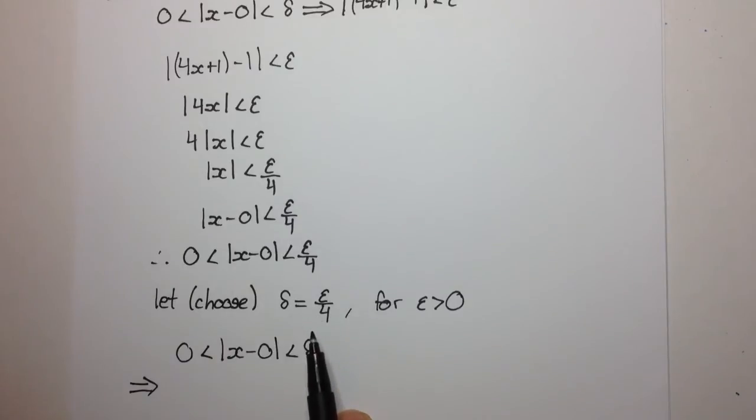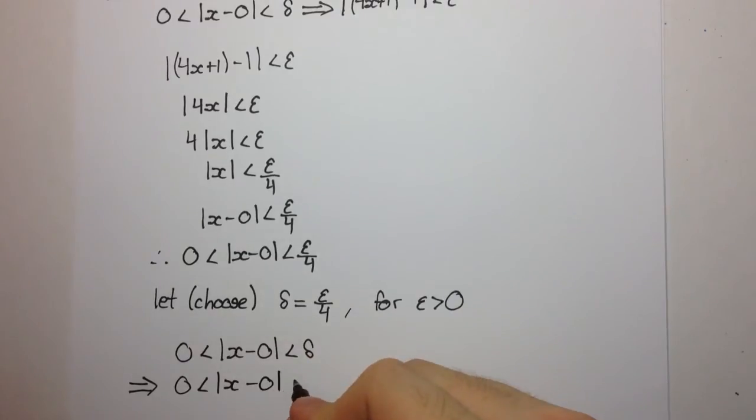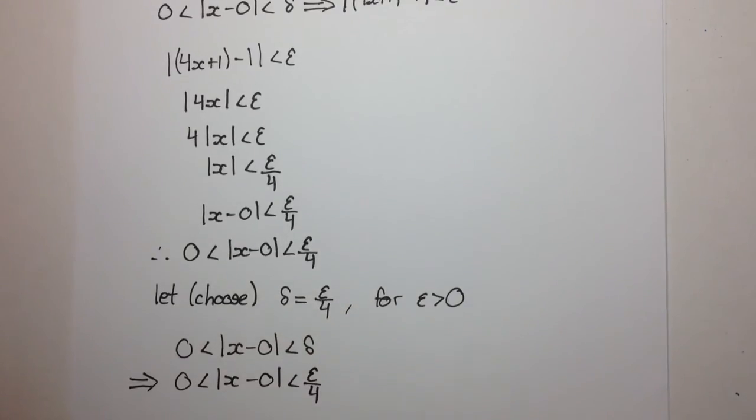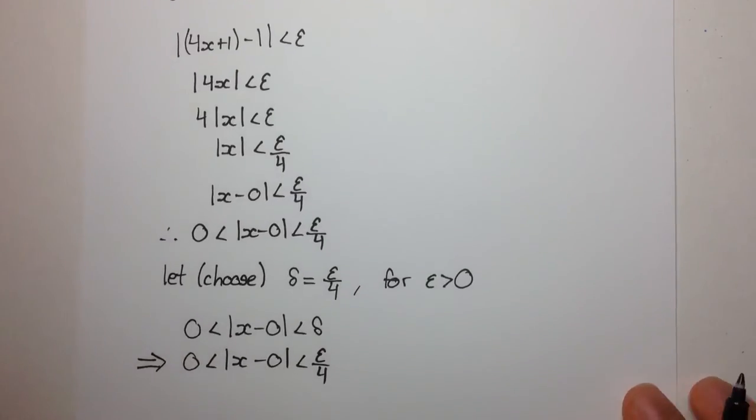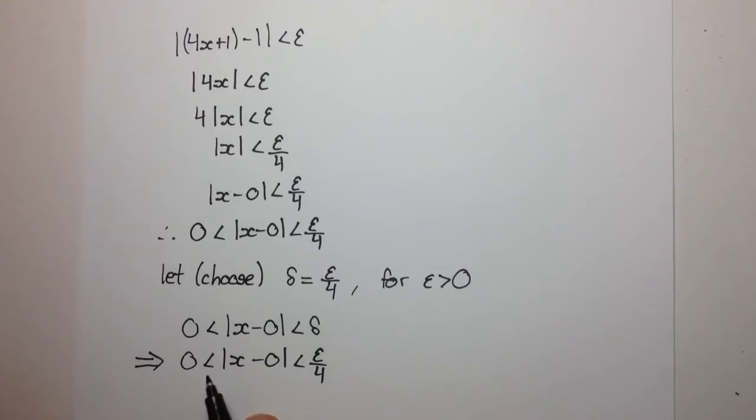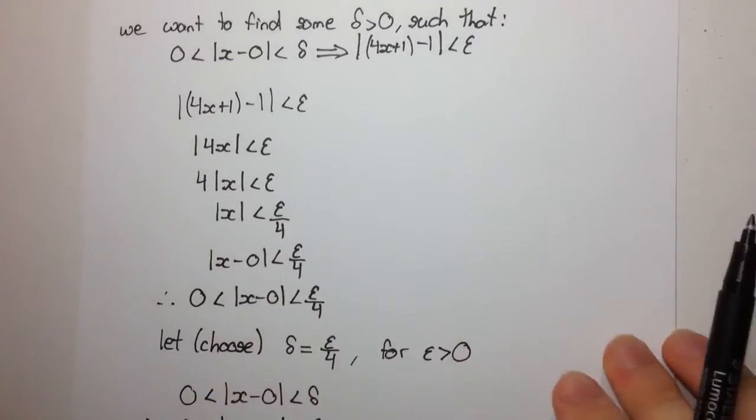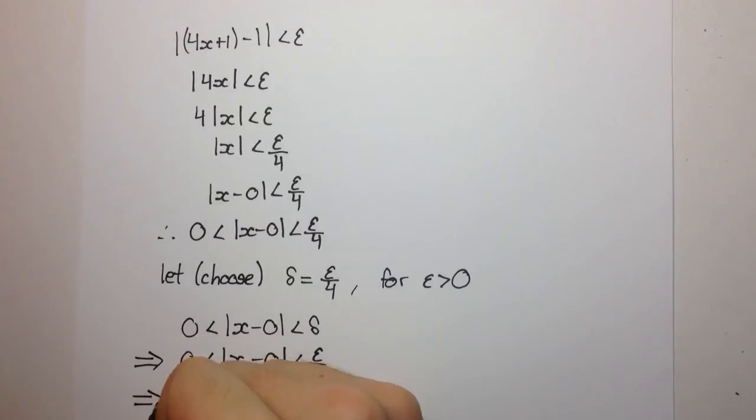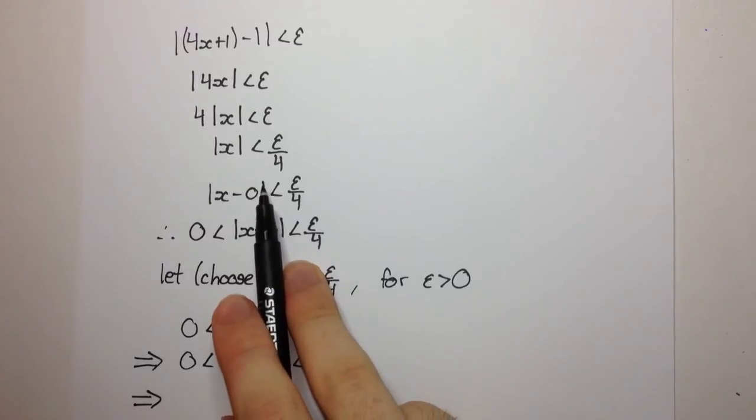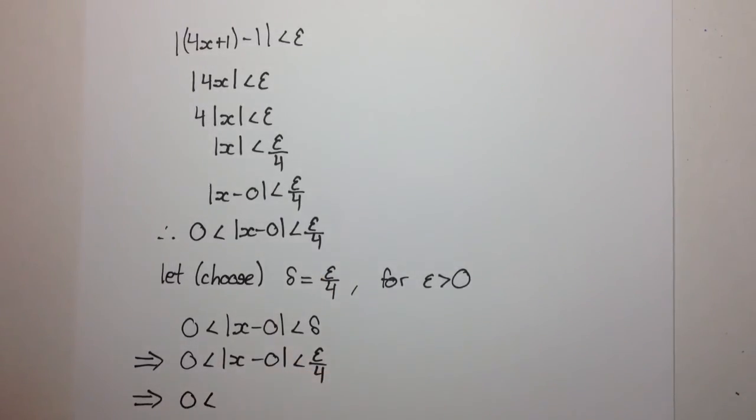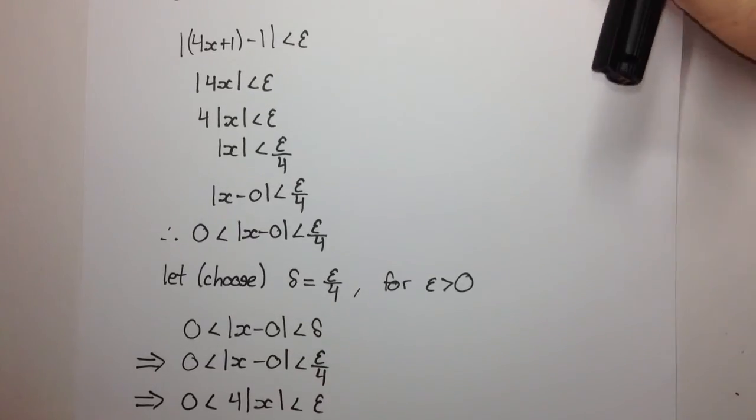So we're choosing our delta to be epsilon on 4, so now this implies this statement here which we get by just substituting our choice of delta in. And now you can see that we can work backwards from this step here. So this is going to imply, and we can multiply through by 4 which was the reverse of what we did here, so multiplying through by 4 we're going to get 0 is less than 4 times the absolute value of x, which should be quite obvious.